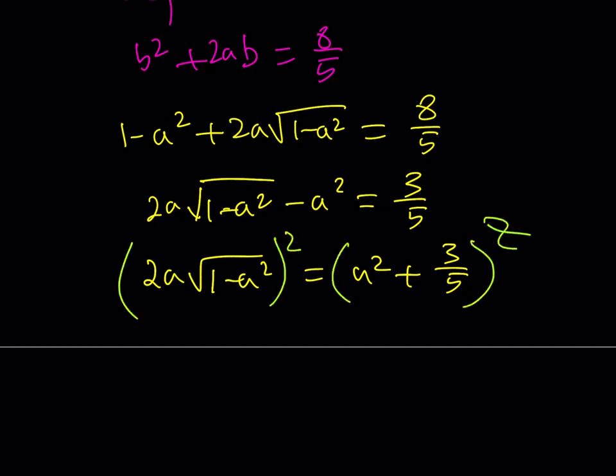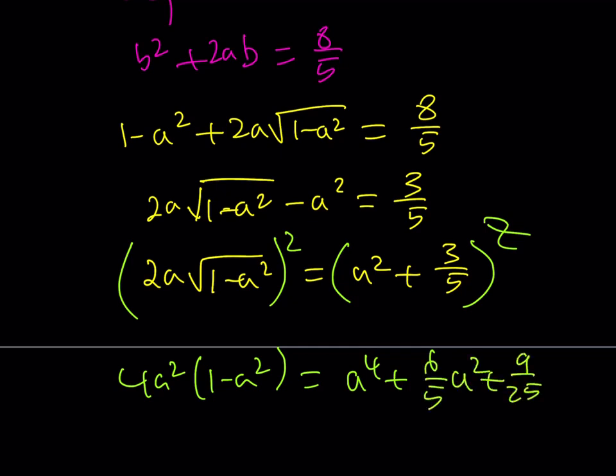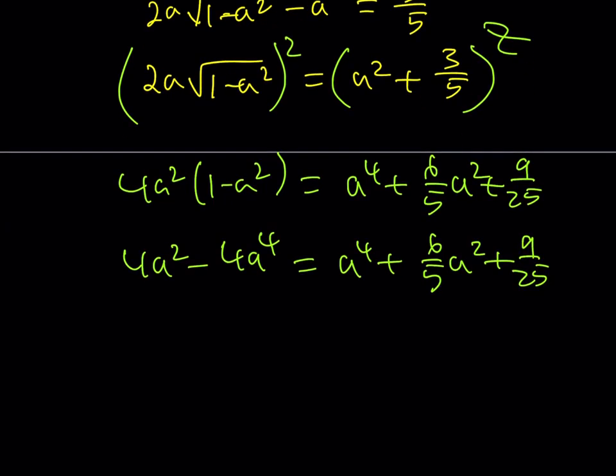I'll be squaring both sides. This is going to give me 4A squared times 1 minus A squared. And this should give me A to the fourth plus 6 over 5 A squared plus 9 over 25. So I'd like to multiply everything by 25. Let me go ahead and distribute this first. And then obviously I want to clear the fractions. So I'd like to multiply everything by 25.